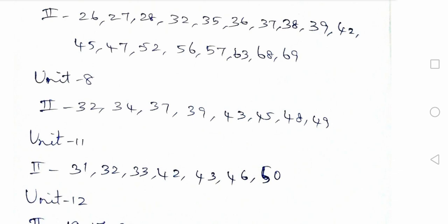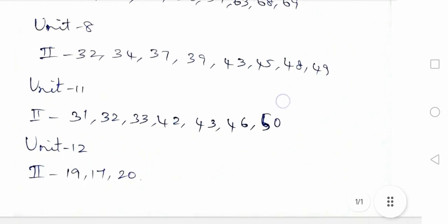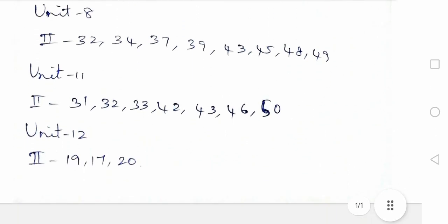Unit 8, there is a little bit more. 2nd Romalateral: 32, 34, 37, 39, 43, 45, 48, 49. This question is about to go. And also Unit 11, 2nd Romalateral: 31, 32, 33, 42, 43, 46, 50. This question is about to go.